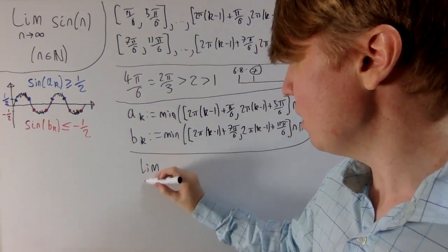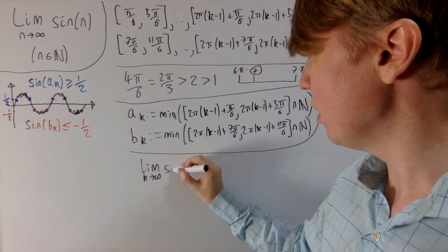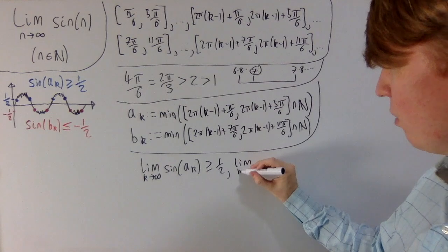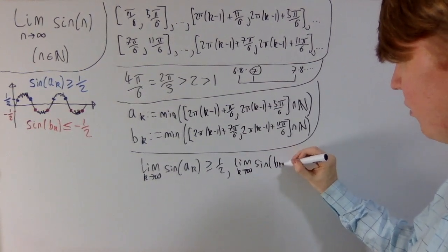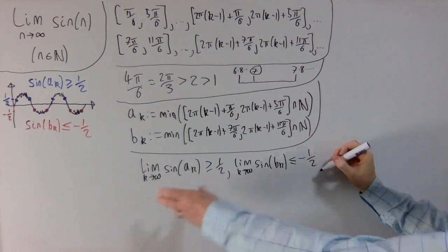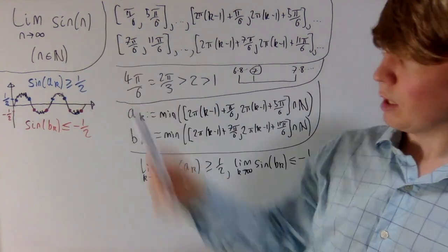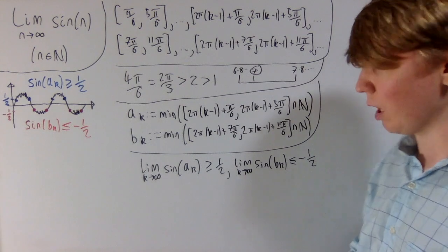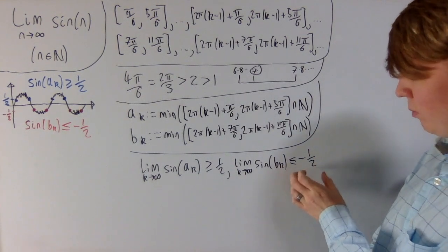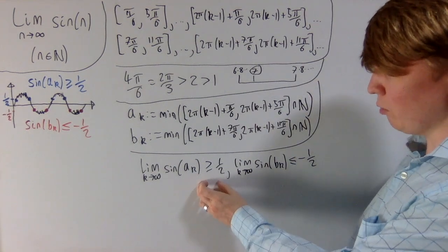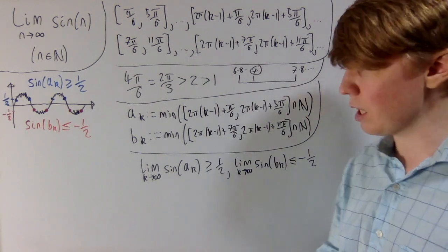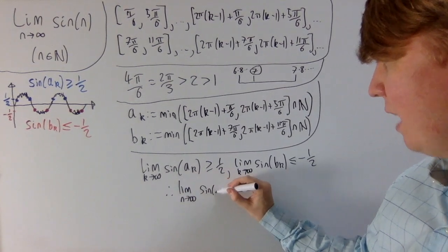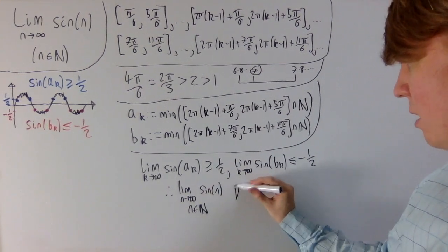We can say the limit as k goes to infinity of sine of a_k has to be greater than or equal to a half. But the limit as k goes to infinity of sine of b_k is less than or equal to minus a half if such a limit were to exist. So if the limit as n goes to infinity of sine of n existed, along one subsequence all terms are always greater than or equal to a half, and along the other all terms are less than or equal to minus a half. The limit would have to be both, which is impossible. Therefore, the limit as n goes to infinity of sine of n — restricting to integer n — does not exist.